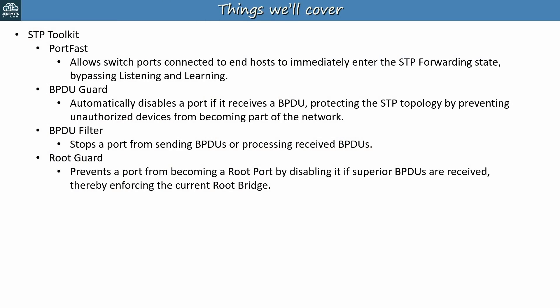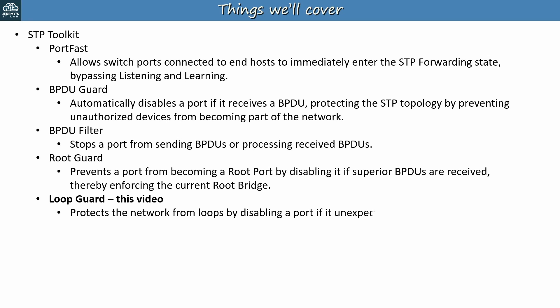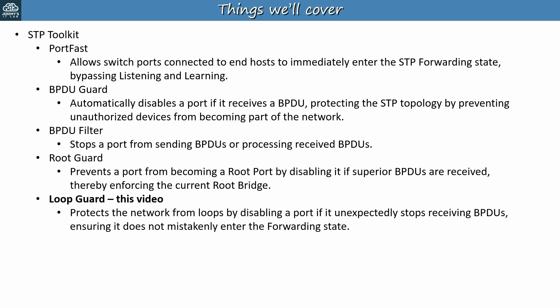The entire point of spanning tree protocol is to prevent loops, that's why we use it. In the previous few videos we covered four features of the STP toolkit: PortFast, BPDU Guard, BPDU Filter, and Root Guard. Now we're moving on to Loop Guard, which protects the network from loops by disabling a port if it unexpectedly stops receiving BPDUs, ensuring it does not mistakenly enter the forwarding state.